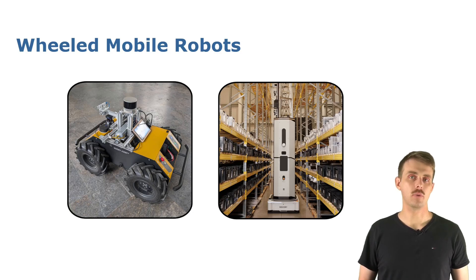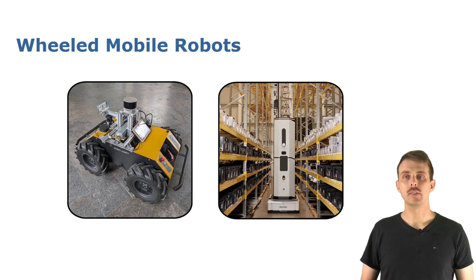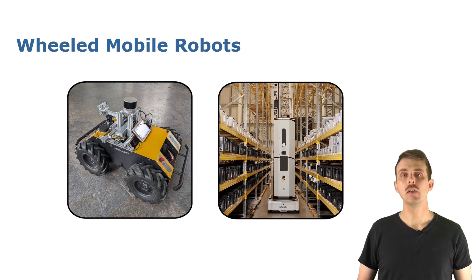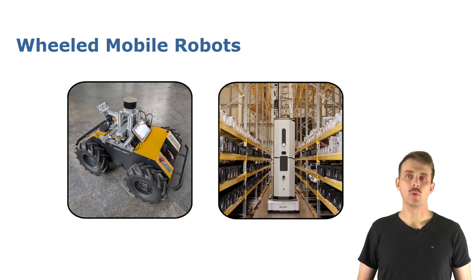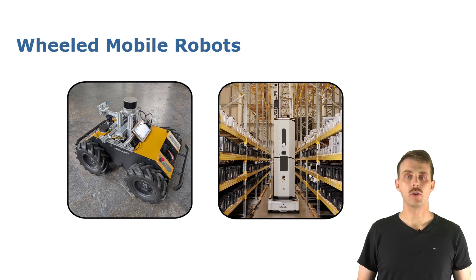Wheeled mobile robots often operate on flat surfaces and here we show two examples. On the left we have a Husky platform that we use in our lab to generate maps of our offices, and on the right you see a warehouse robot that is operating autonomously and scanning the inventory of the warehouse.